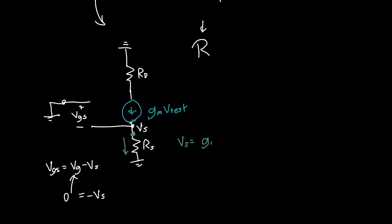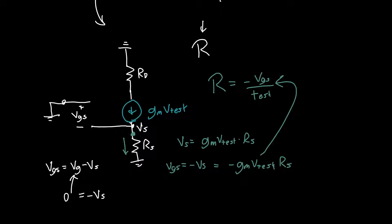Now we can just plug that into the equation for return ratio: negative VGS over V test. Since here VS is minus VS, this is just equal to minus GM V test RS. Let's just plug that into this equation and we'll see that the return ratio is negative negative GM V test RS over V test.